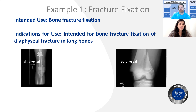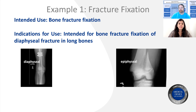On the left side we have an image of a diaphyseal fracture, and on the right side a picture of an epiphyseal fracture, which is at the end of the bone — diaphyseal being in the middle of the long bone. In the indications for use, they have specified that it is intended for bone fracture fixation of diaphyseal fractures in long bones. So it is only going to be used for the middle of the long bone. That is the difference between intended use and indications for use — indications give more detail about where it will be used, while intended use is just a broad idea of what the device is used for.